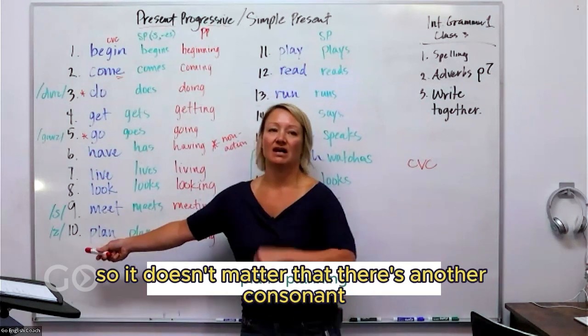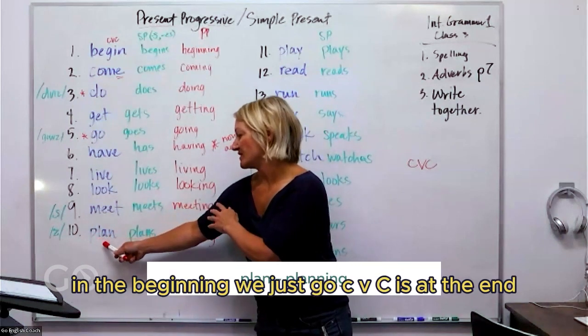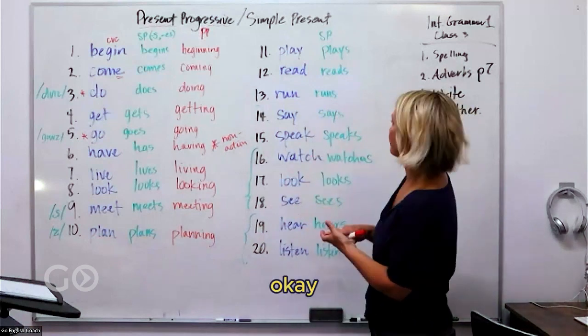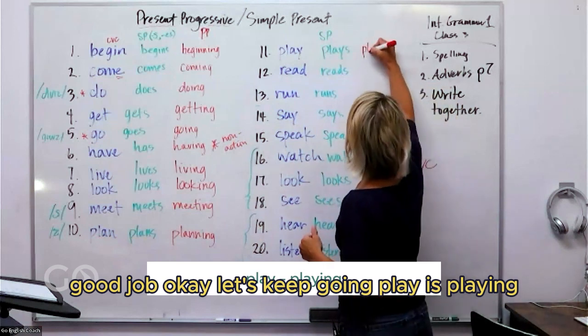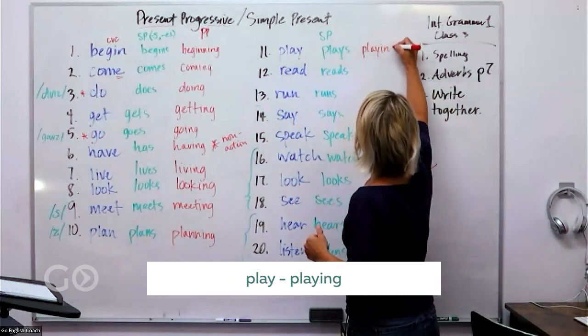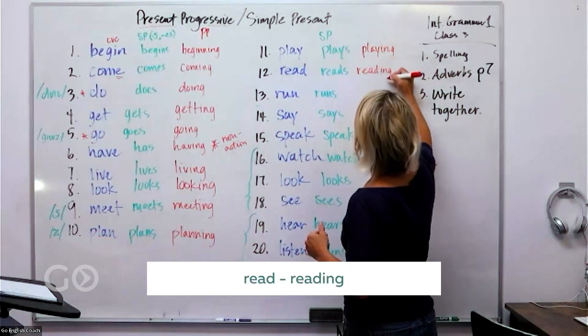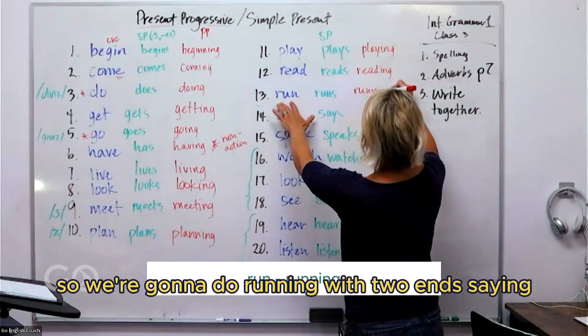Let's keep going. Play is playing. Read is reading, super simple. This is the CVC, so we're going to do running with two N's.